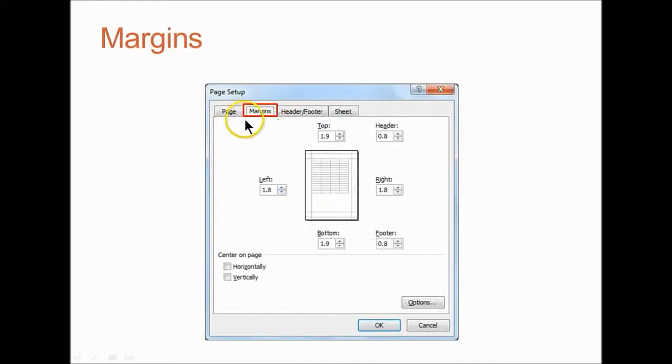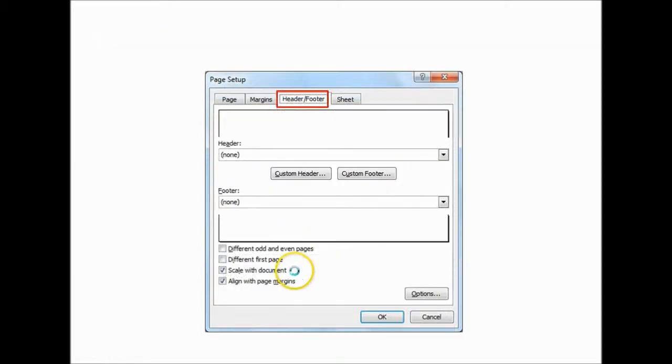You then have margins which you can easily adjust your margins for top, left, bottom, and right. You can insert your headers and footers. If you want to add a header in your spreadsheet, click on custom header. If you want to add a footer, click onto custom footer.